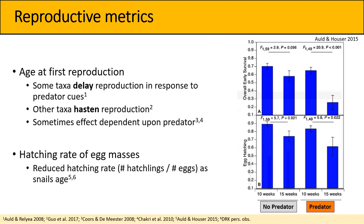For hatching rate, with the snails I work with, we define it as the number of hatchlings that successfully emerge from their eggs out of the total number of eggs in an egg mass. The study by Alden Hauser in 2015 looked at, among other things, hatching rate in response to age and predator exposure. The key takeaway from that graph is the lower panel: regardless of treatment — control or predator-exposed — there's a significant reduction in hatching rate in older parents.